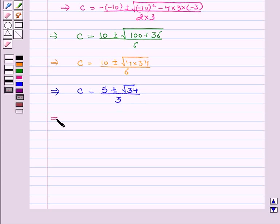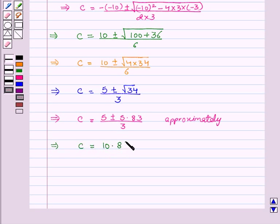This implies c = (5 ± √34) / 3. This implies c = (5 ± 5.83) / 3, approximately, where 5.83 is the approximate value of √34.